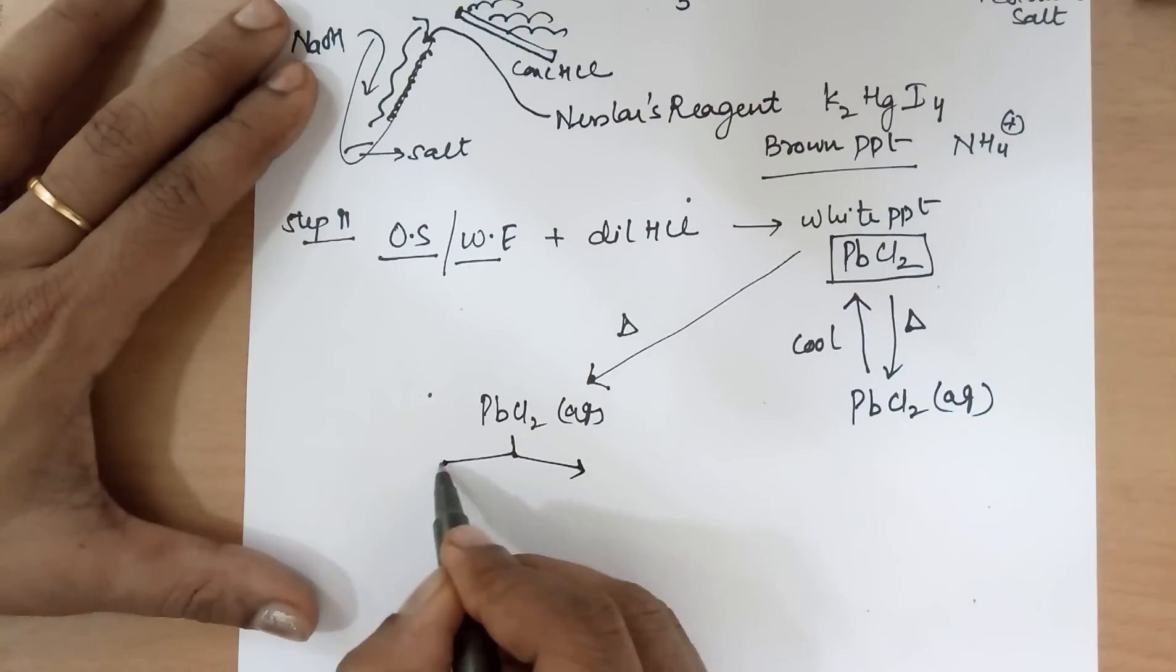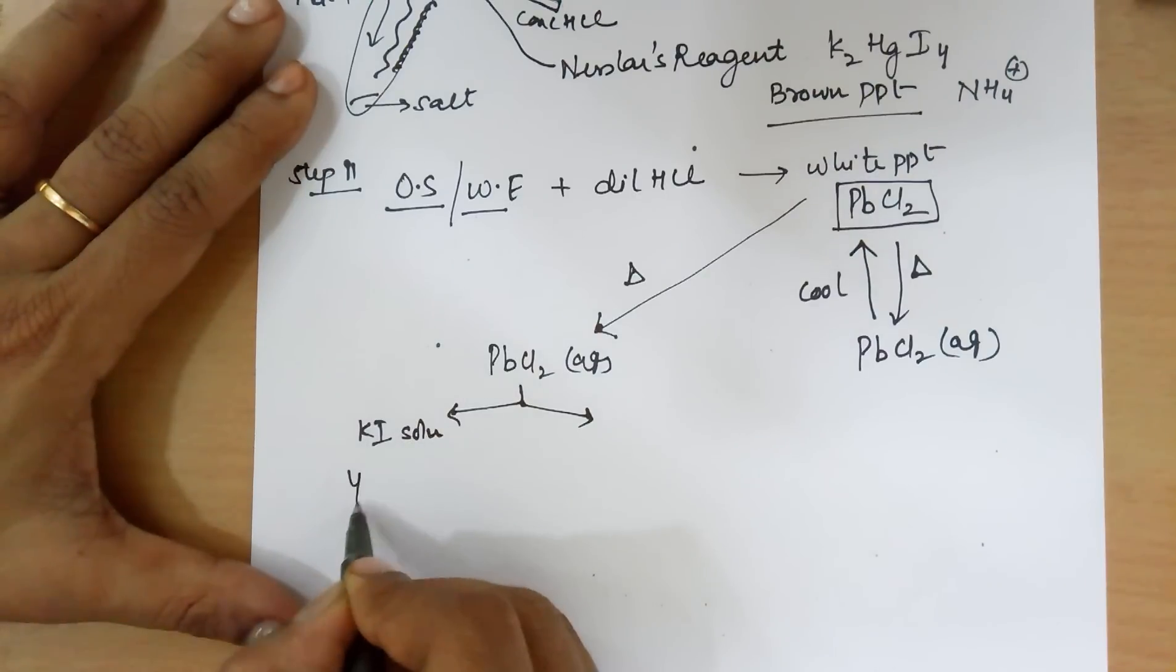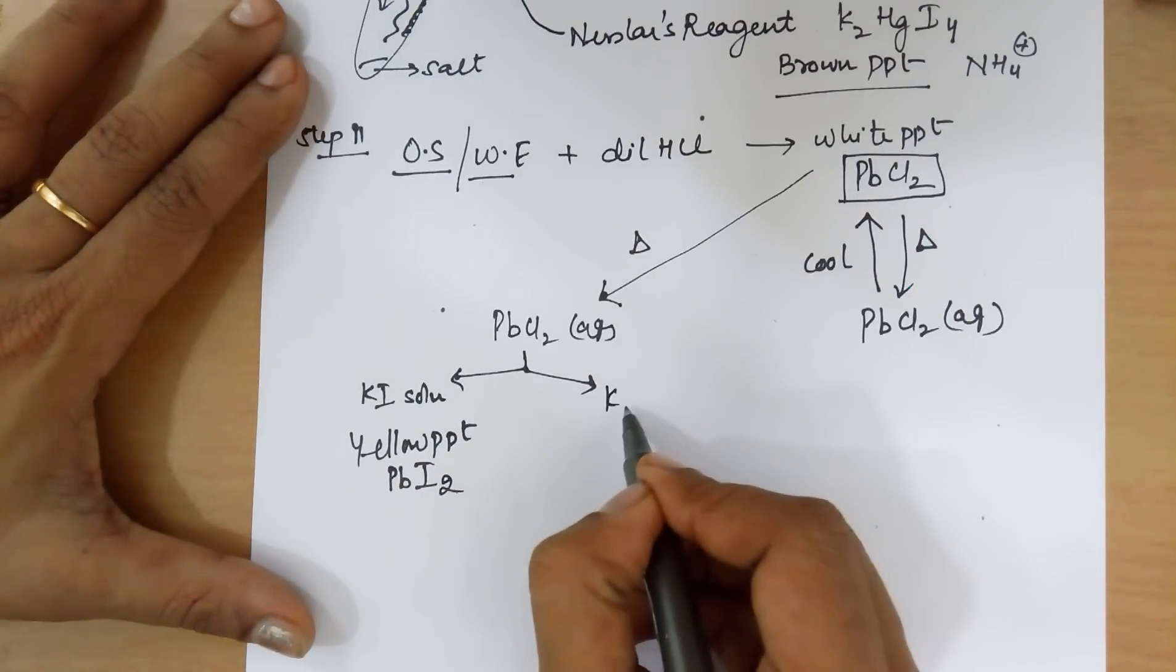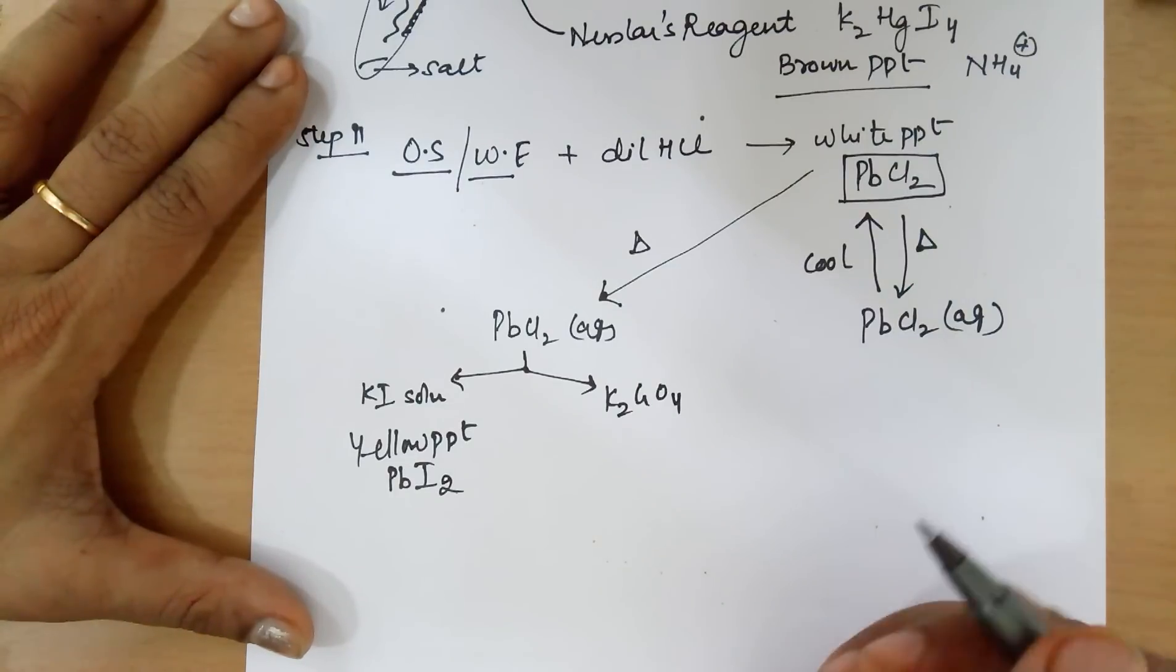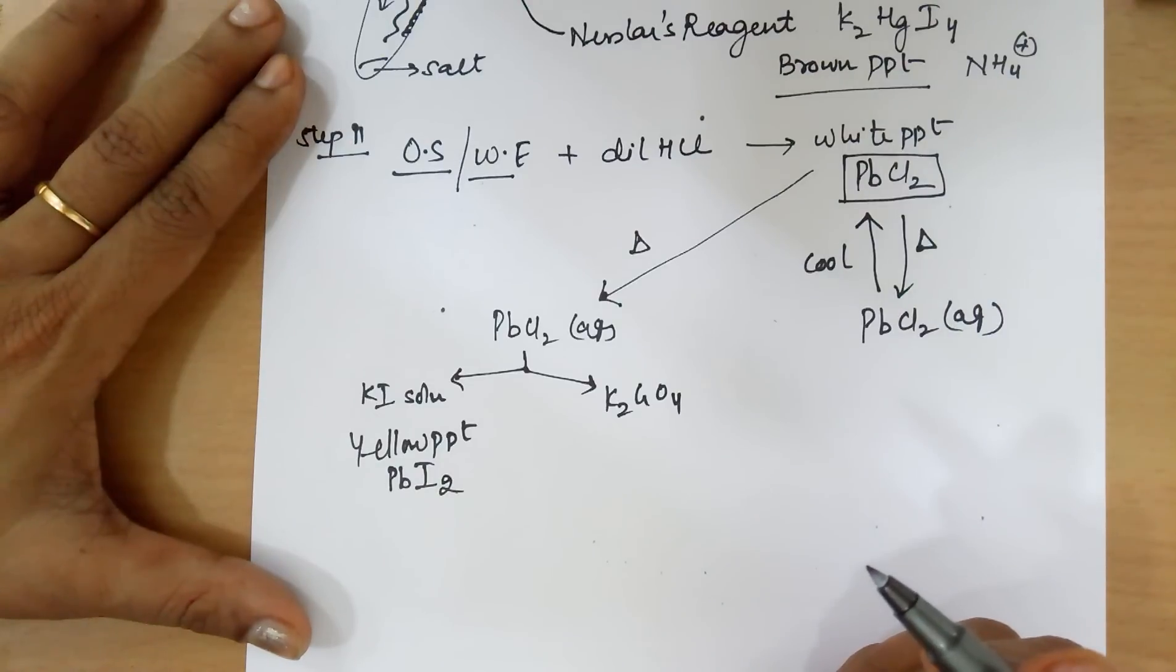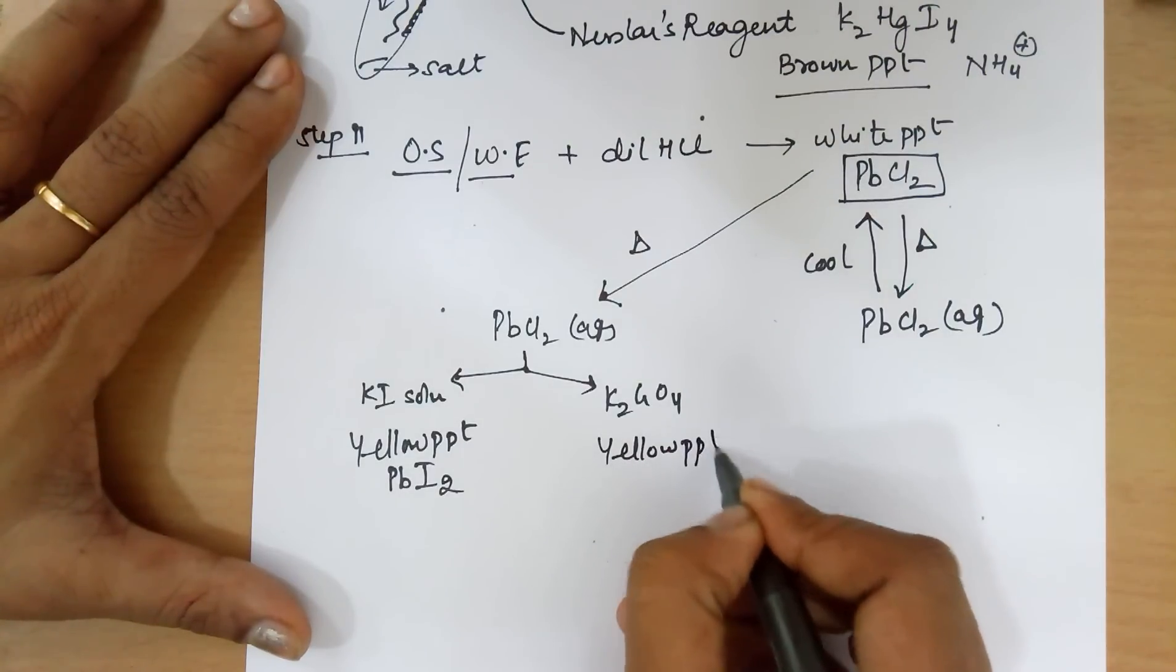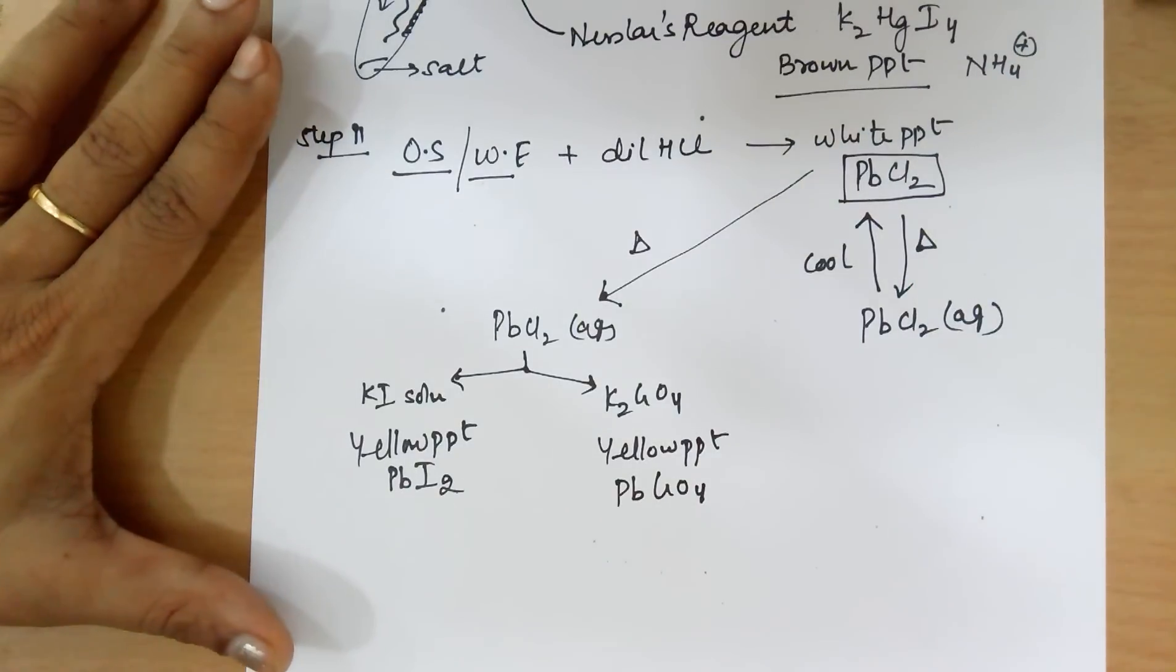Divide it into two halves. To one half, add KI solution. You get yellow PPT of PbI2. To the other part, add K2CrO4 potassium chromate. Mind you, it is not potassium dichromate. Potassium dichromate has two CRs in it. This is potassium chromate with one CR. You again get a yellow PPT. This yellow PPT is of PbCrO4. And that confirms your group 1.